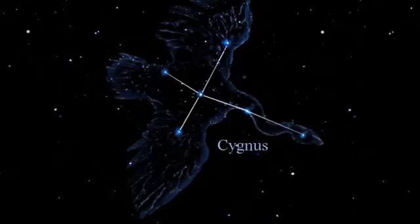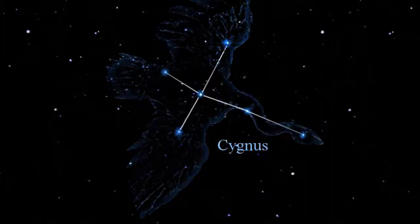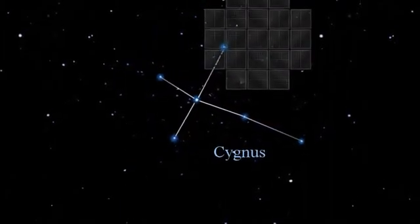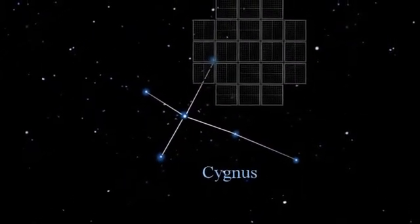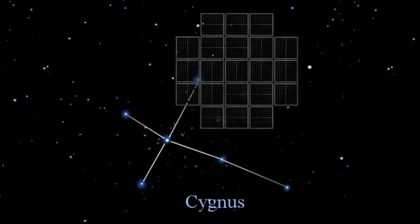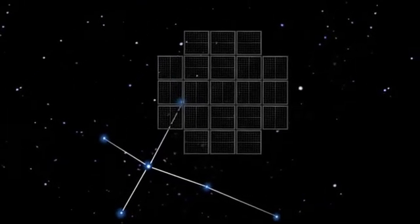NASA as well are doing something similar. Using a satellite in space called Kepler, they are staring at a region around a constellation known as Cygnus. Within this region, they will be able to stare at thousands of stars and again look for this subtle dimming and brightening of the planets.